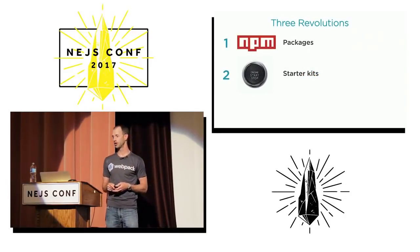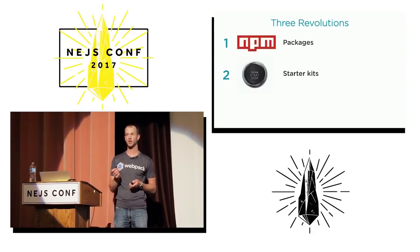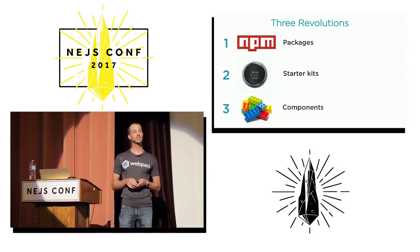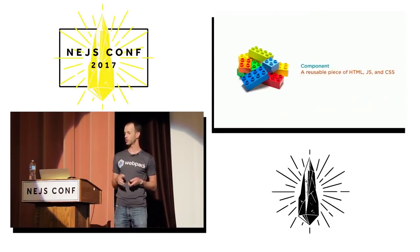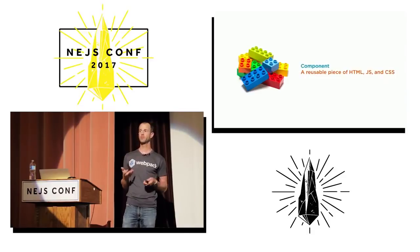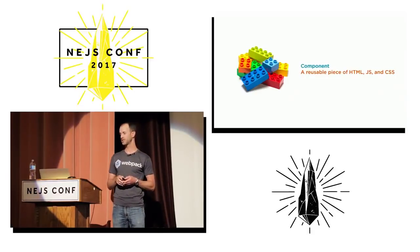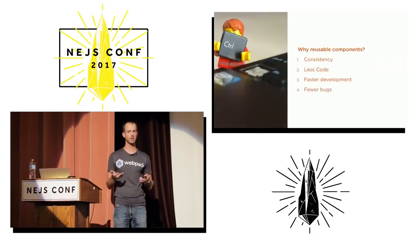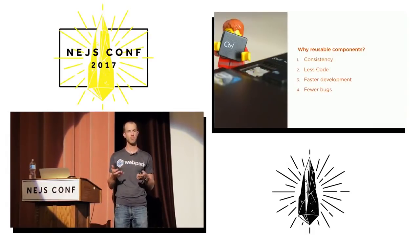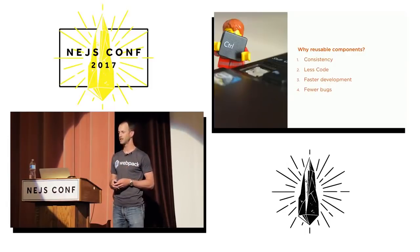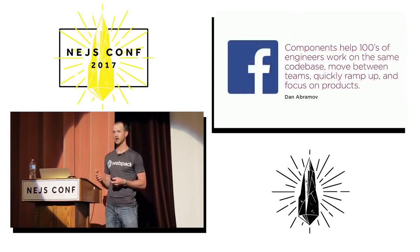We have talked about two of the three reusable revolutions — packages and starter kits. I'm going to close out this talk with the final revolution, which is reusable components. All of these build upon one another. For those not familiar, a reusable component is a reusable piece of HTML, JavaScript, and CSS. We know the big reasons we want them: consistency, less code, faster development, fewer bugs.